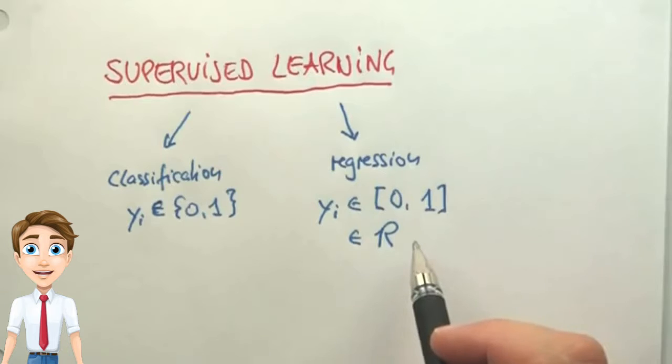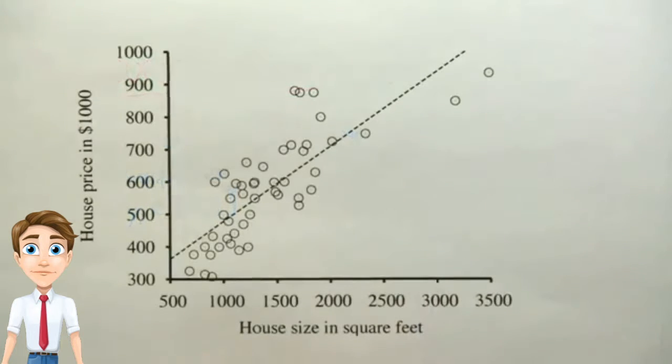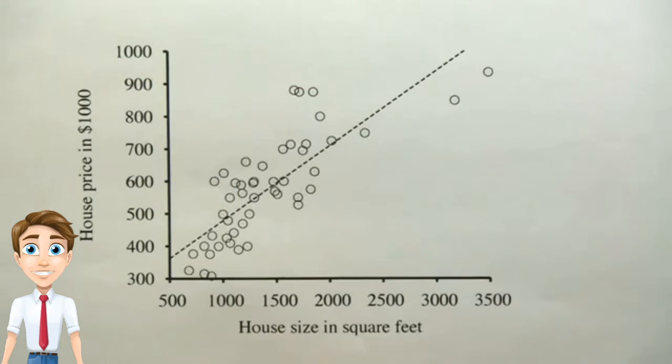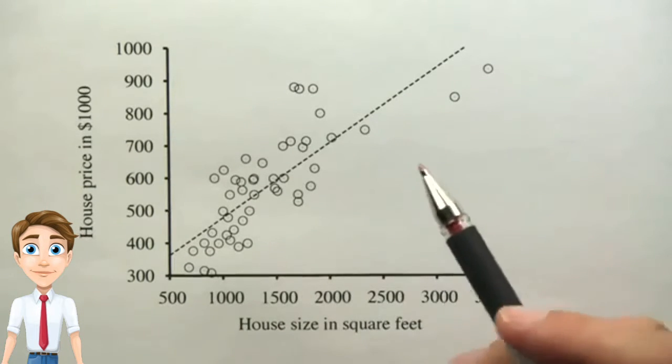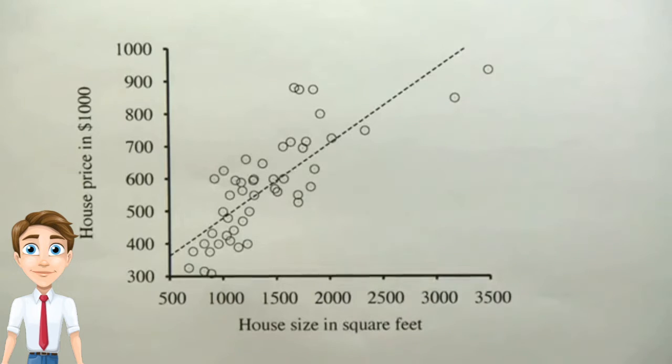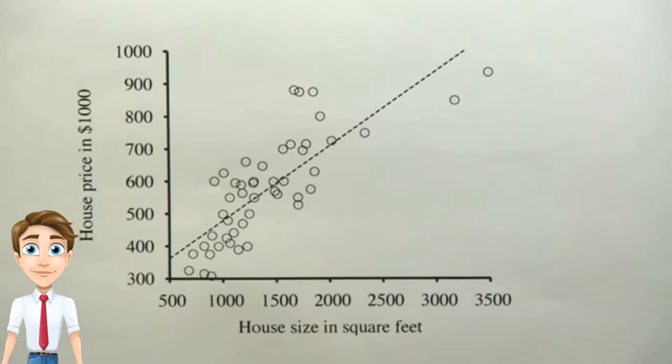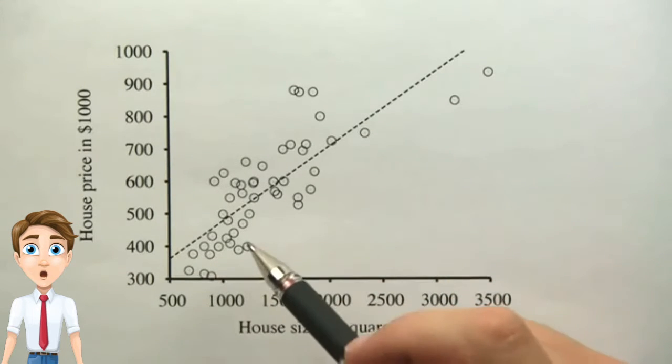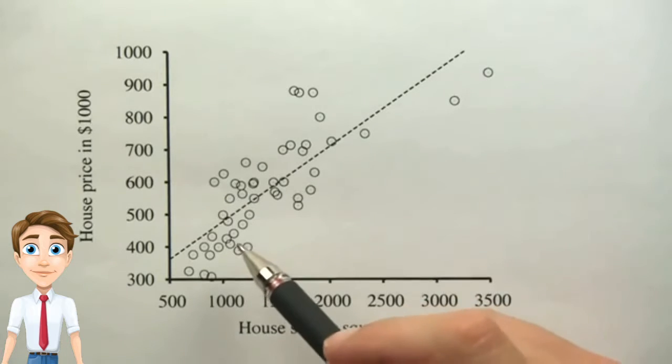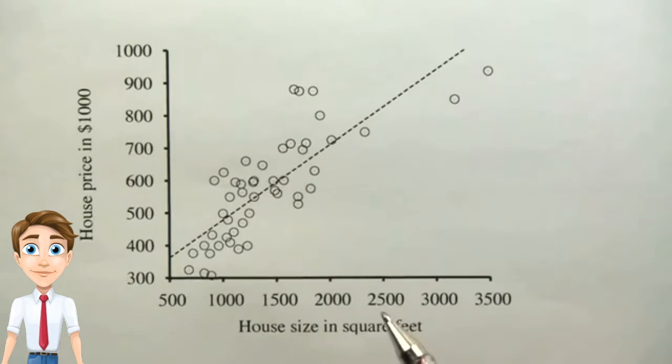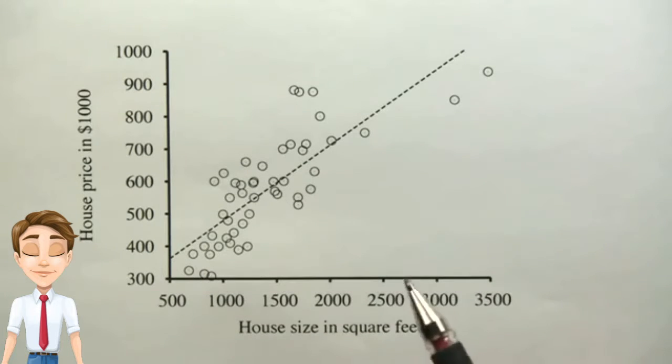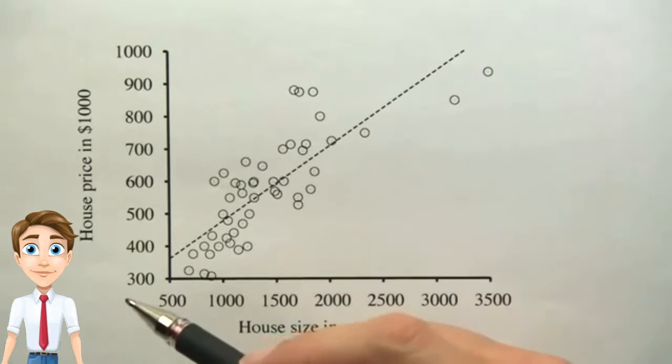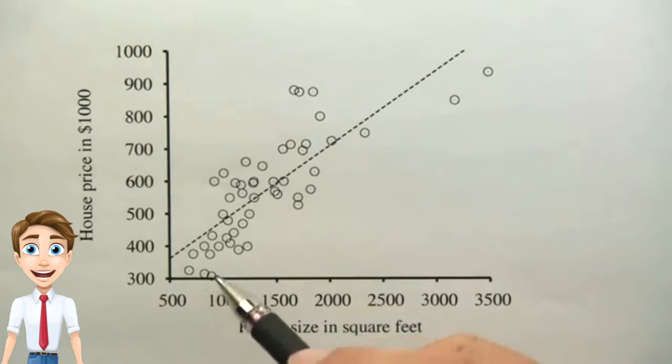So let's look at regression next. Here's my first quiz for you on regression. This scatter plot shows for Berkeley, California, for a period of time, the data for each house that was sold. Each dot is a sold house, and it graphs the size of the house in square feet to the sales price in thousands of dollars.